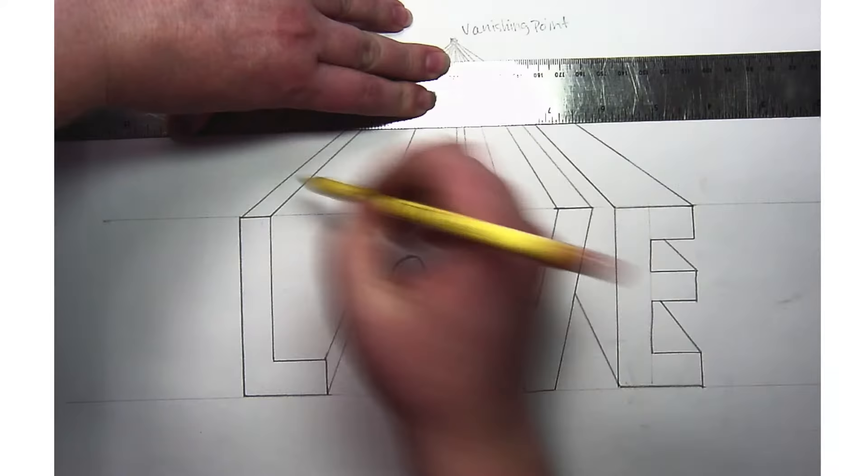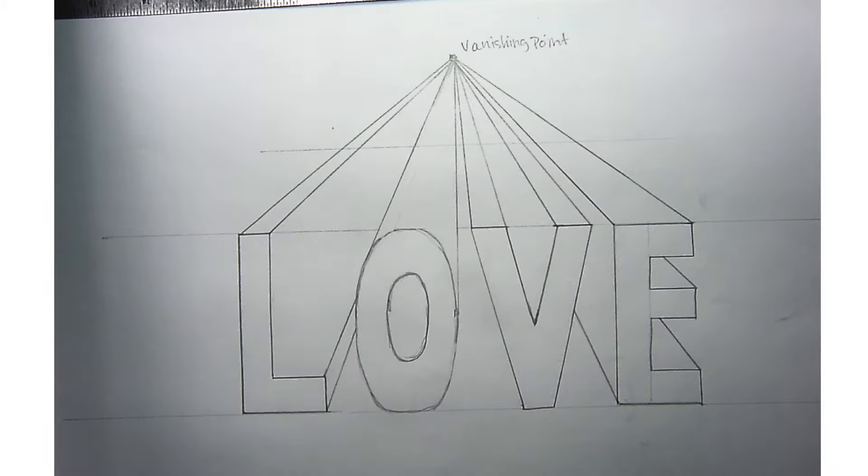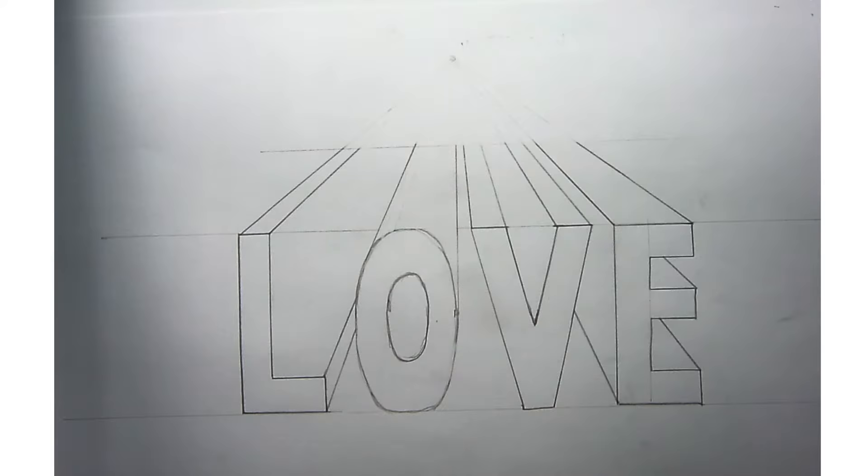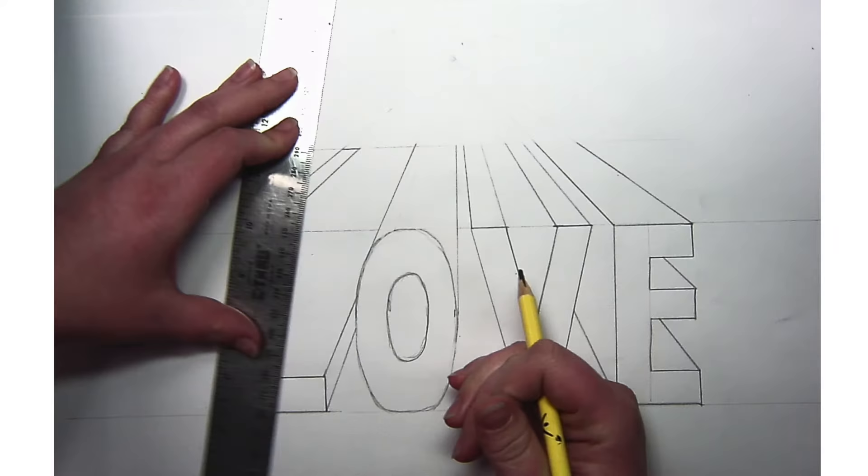I can go ahead and erase everything past those letters. Think of these as kind of like buildings. The top would be like the roof that's straight, a nice flat roof.